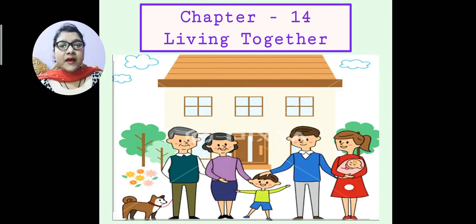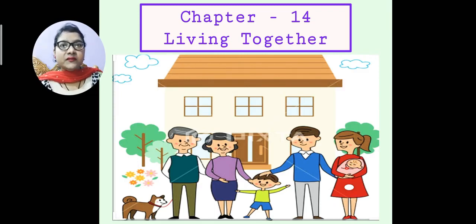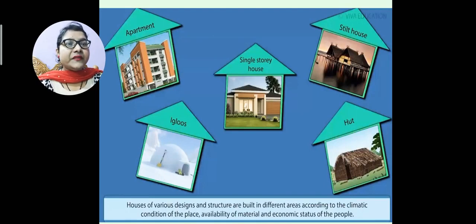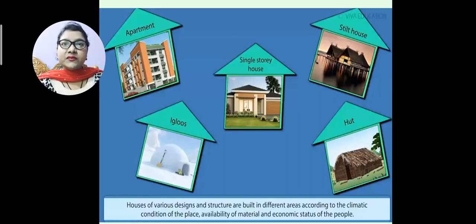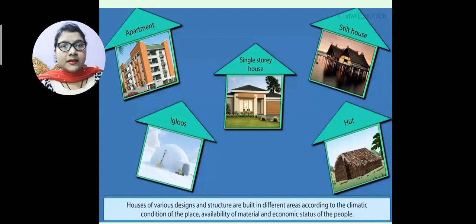Their father explained that people build houses differently from region to region, depending on a number of factors. The first thing given in your chapter is the factors which influence the design and structure of a house. There are different kinds of houses — apartments, single-storey houses, igloos, stilt houses, huts — all varying by region. The three main factors are: climatic condition of the place, availability of material, and economic status of the people.